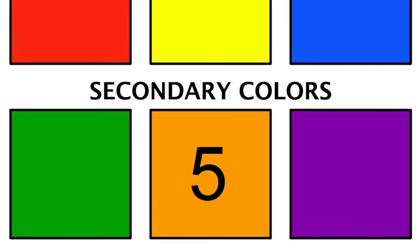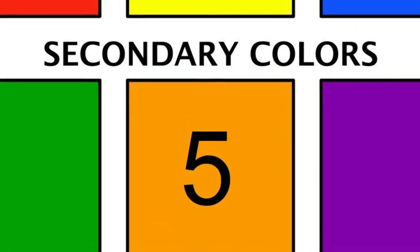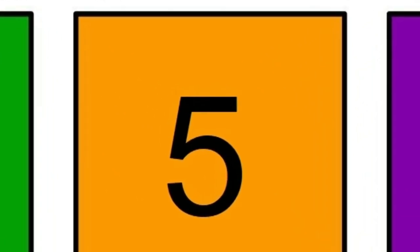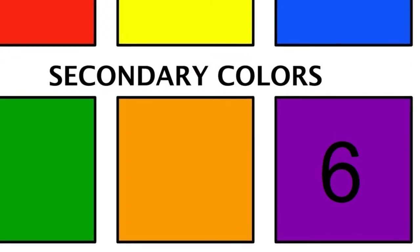For our newly proposed universal standard, I think we can all be in agreement that red is number one. And since white is not a color, yellow will be number two. Then, of course, blue being number three. Now, green would be number four. And as we follow along the primary and secondary color chart, orange is number five, which leaves purple as number six.